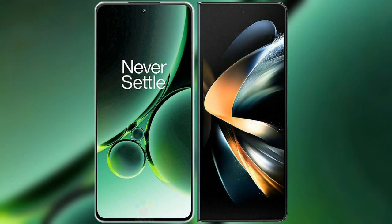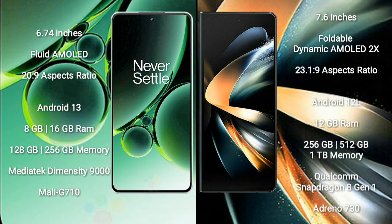I will compare the new OnePlus Nord 3 with Samsung Galaxy Z Fold 4. OnePlus Nord 3 comes with a 6.74-inch flat AMOLED display and aspect ratio 20:9. Samsung Galaxy Z Fold 4 comes with a 7.6-inch foldable dynamic AMOLED display and aspect ratio 23.1:19.